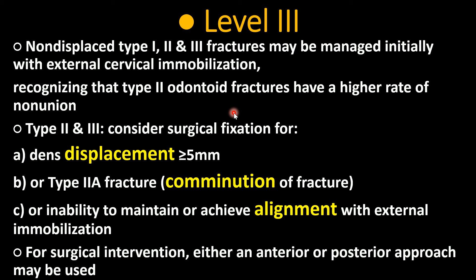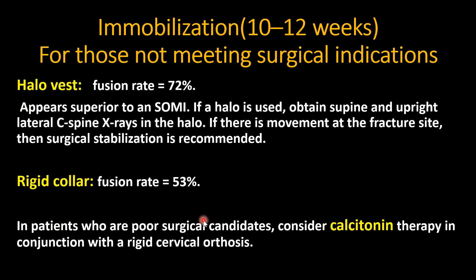Type 2 has a higher rate of non-union. Consider surgical fixation for dens displacement more than 5 millimeters, Type 2a (comminution fracture), or inability to maintain alignment with external immobilization. For surgical intervention, either anterior or posterior approach is used. External immobilization for 10 to 12 weeks is used for those not meeting surgical indications — halo vest is superior to SOMI. Halo vest fusion rate is 72 percent; rigid collar fusion rate is 53 percent. Calcitonin therapy has been used in some studies in conjunction with a rigid cervical orthosis.